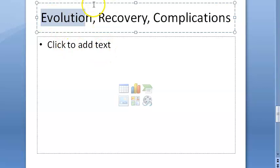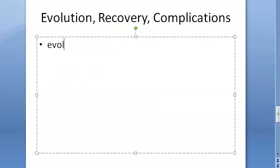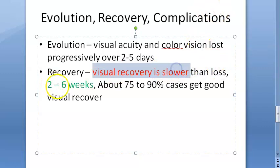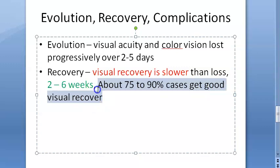Evolution: visual acuity and color vision are lost progressively over two to five days. Visual recovery is slower than the loss — it starts within two weeks and may take up to four to six weeks. About 70 to 90 percent of cases achieve good visual recovery.